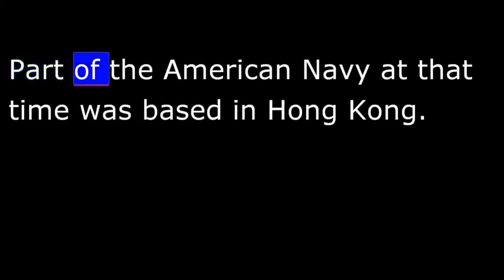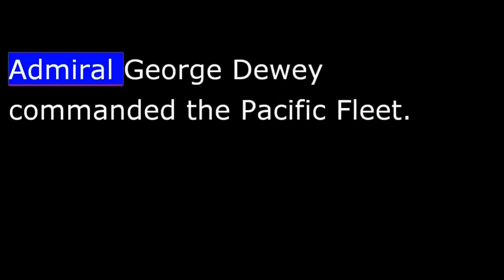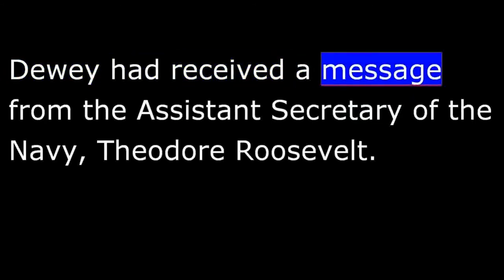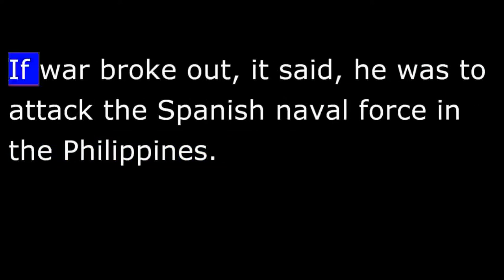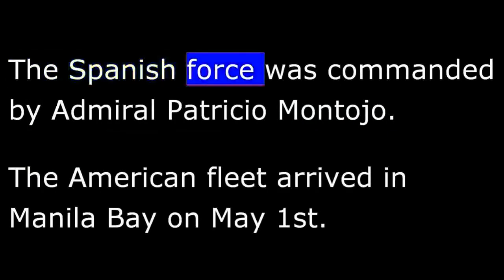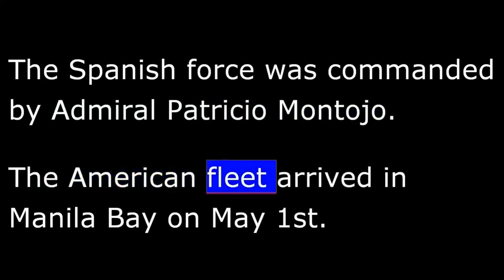Part of the American Navy at that time was based in Hong Kong, and the rest was based on the Atlantic coast of the United States. Admiral George Dewey commanded the Pacific Fleet. Dewey had received a message from the assistant secretary of the Navy, Theodore Roosevelt. If war broke out, he was to attack the Spanish naval force in the Philippines, commanded by Admiral Patricio Montojo.